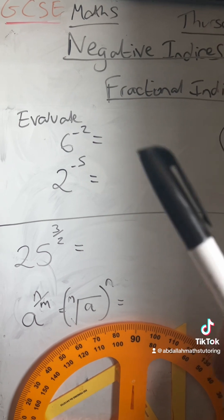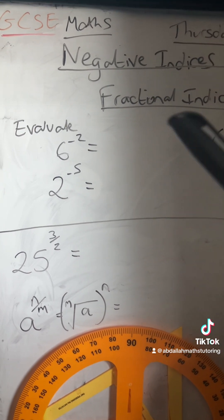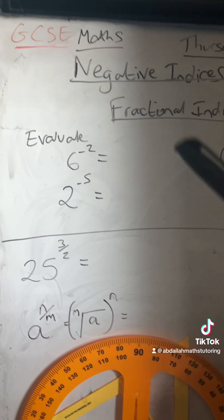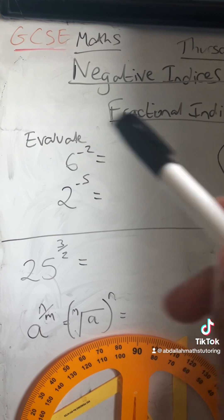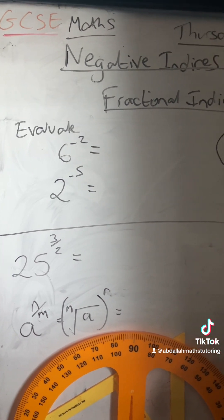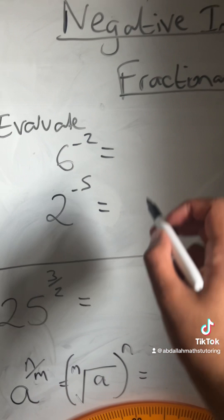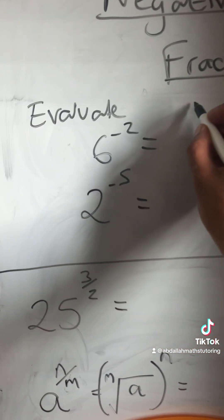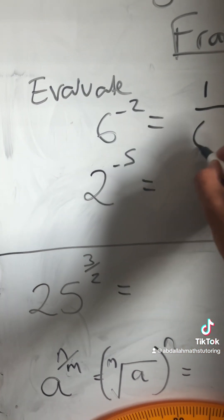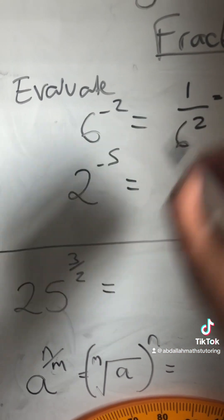So negative indices — in your exam, like a non-calculator paper, it might say something like this: evaluate 6 to the minus 2. Now what does this mean? Well, a negative power does the reciprocal — it's the inverse. It means 1 over 6 squared.